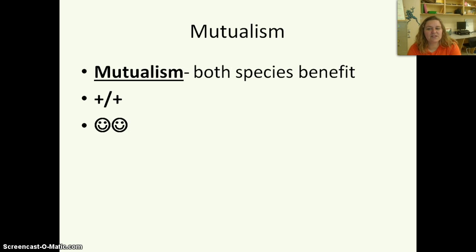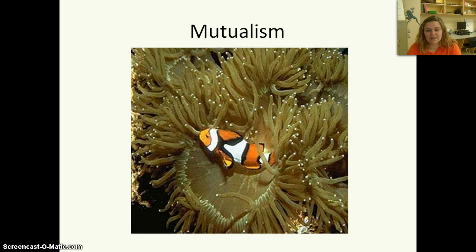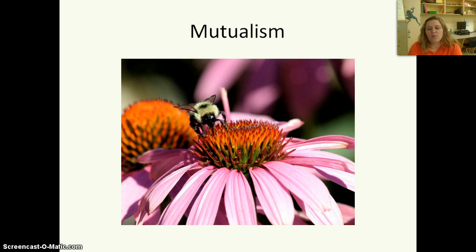Then we have mutualism. This happens when both species benefit — a plus-plus or smiley-smiley relationship. Here we see Nemo living in his anemone: Nemo is getting protection, and the anemone is getting cleaned because Nemo eats the stuff that grows on it. We also see a bee with a flower — the bee is getting fed and the flower is being pollinated.